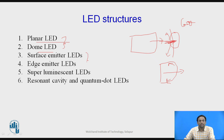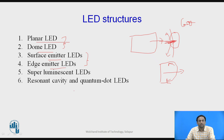Surface emitter LEDs and edge emitter LEDs are considered on the basis of their geometry. Planar and dome-shaped LEDs are not useful when we want to send data from the source to a fiber optical cable — single mode or multi-mode — because most of the light must be transmitted through the cable following total internal reflection. For longer-distance data transmission, surface emitter LEDs, edge emitter LEDs, super-luminescent LEDs, and resonant cavity quantum dot LEDs are used.